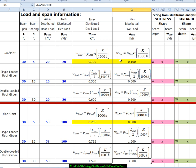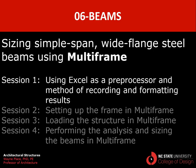Okay, so here are the four numbers that we're going to take into Multiframe. We will use these to load Multiframe. And the reason we don't need these numbers right here is because Multiframe automatically transfers loads from the joist to the girders, or in other words from the secondary beams to the primary beams. So all we have to do in Multiframe is load the joist and then it will take care of all the rest of the analysis for us. That ends the first session on sizing simple span wide flange steel beams using Multiframe. Session one, dealing with using Excel as a preprocessor and a method for recording and formatting results.